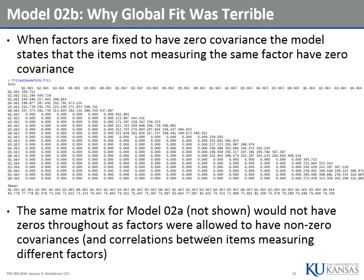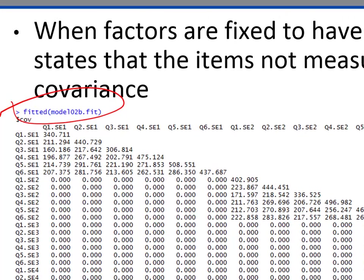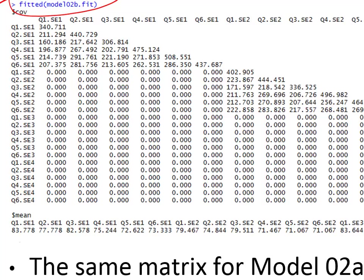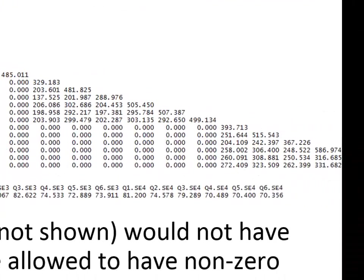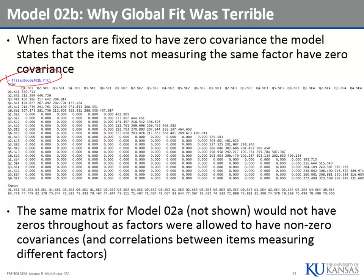We set the covariance matrix of the factors to zero. Here's the fitted covariance model matrix — the model-predicted covariances. Here are all the items that measure the first factor, and they have a predicted covariance, but zero covariance with the other items — that's the block diagonal structure. We fixed the factor covariance to zero, so we're implying that our first six items only covary with each other. With everything else they don't covary. That's where misfit is going to happen. You can see the first six, the second six for factor two, the third six for factor three.